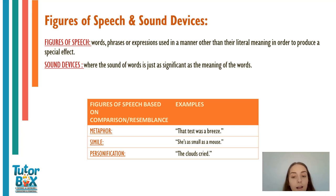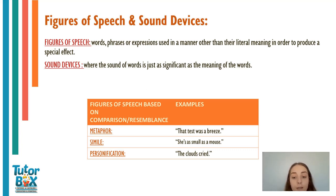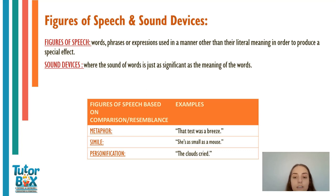An example of a metaphor is 'that test was a breeze.' Obviously the test is not an actual breeze, but metaphorically this means the test was really easy. An example of a simile is 'she's as small as a mouse' — she's not actually a mouse, but this just means she's really small, using the word 'as.' For personification, the example is 'the clouds cried.' Clouds cannot actually cry — this means it was raining. Crying is a human quality, and clouds are not human, so it's attributing the human quality of crying to a cloud, which is a thing.